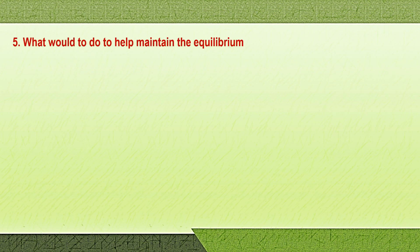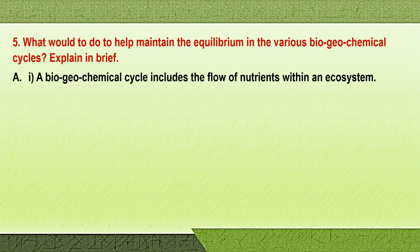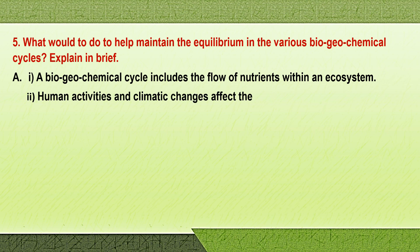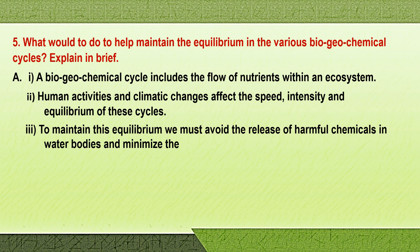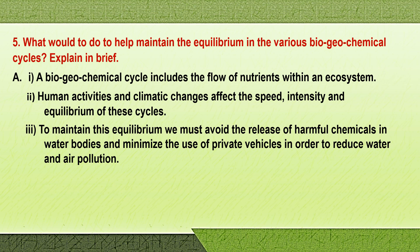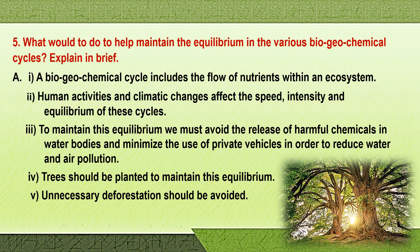Question five: what would you do to help maintain the equilibrium or balance in the various biogeochemical cycles? A biogeochemical cycle includes the flow of nutrients or matter within the system. Human activities and climatic changes affect the speed, intensity, and equilibrium of these cycles. To maintain this balance we must avoid releasing harmful chemicals into water bodies like lakes and rivers, minimize the use of private vehicles to reduce water and air pollution, plant trees, and avoid unnecessary deforestation or cutting of trees.